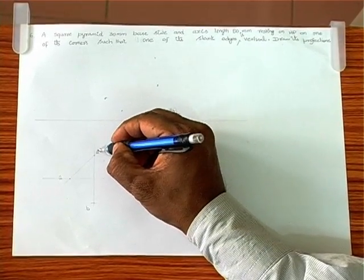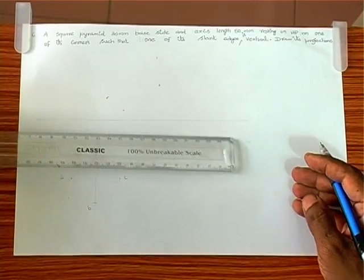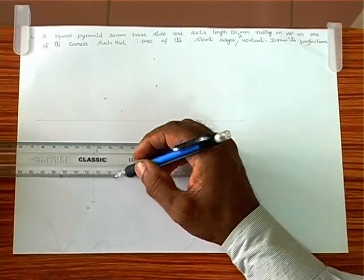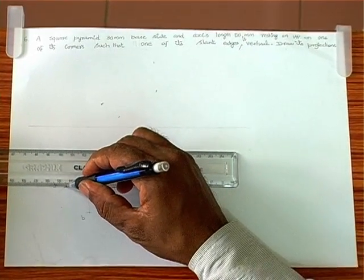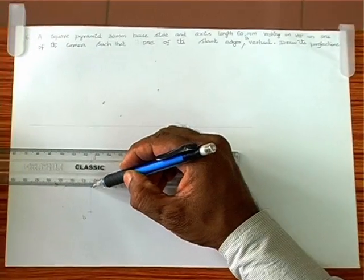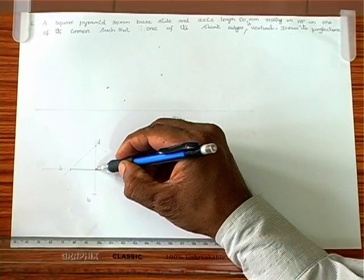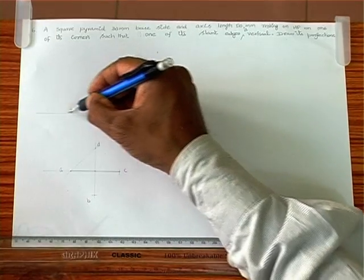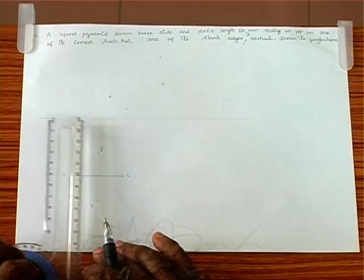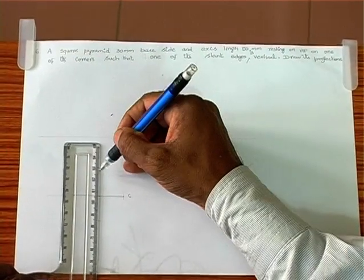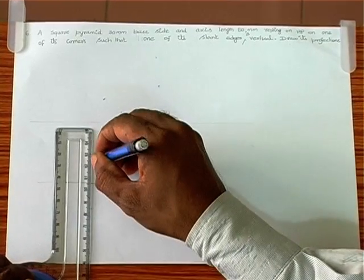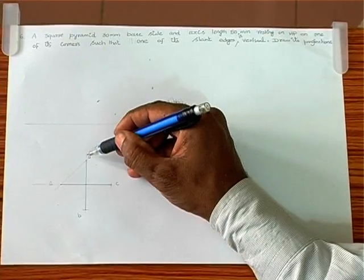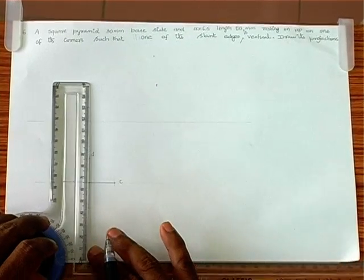Square in corner position states: the line joining the corner and the center of the plane must be strictly parallel to the XY line. The center of the plane is here, and here is one corner — we connect them by a line which must be strictly parallel to XY. In corner position, A is isolated and C is isolated; B and D come together.